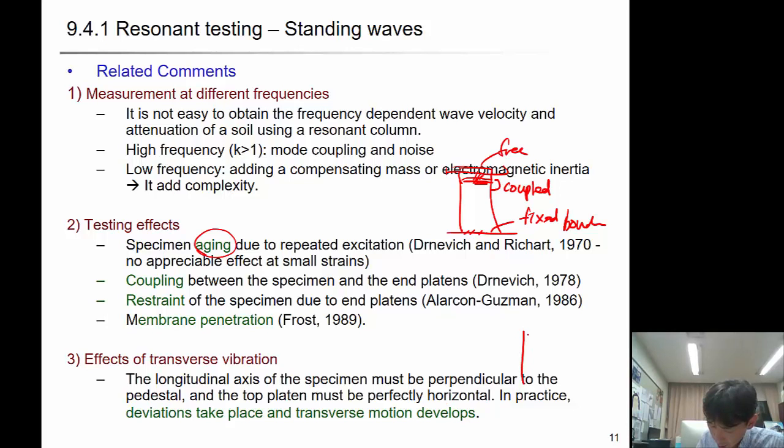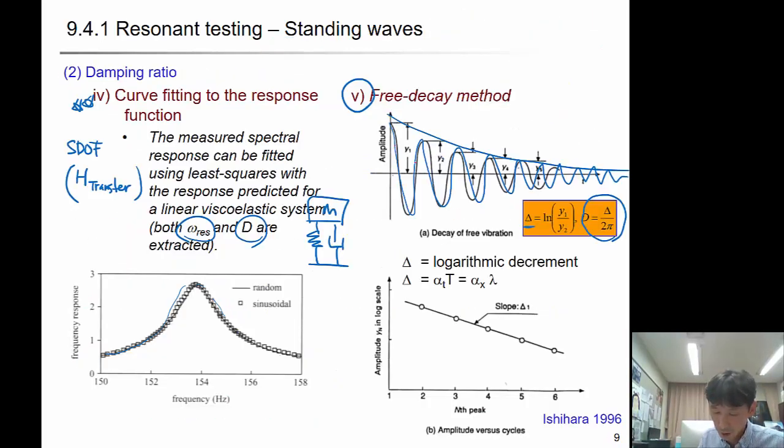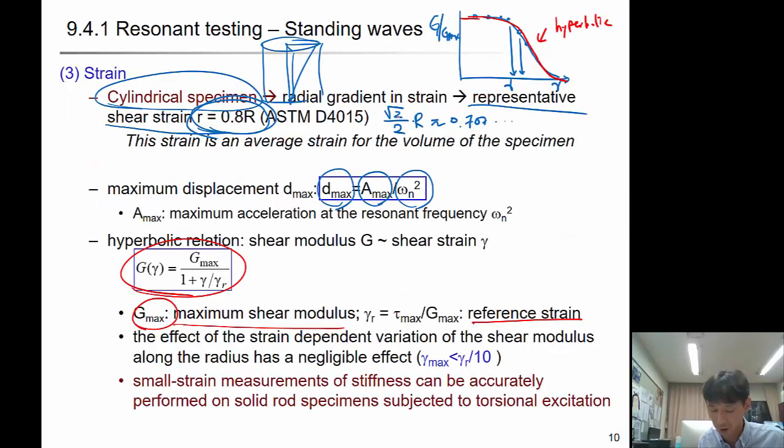The top platen must be perfectly horizontal. In practice, deviation takes place and transverse motion develops. If there's some tilting of the driving plate, it will cause transverse motion and add significant noise to your signal. Counter-EMF effects: the vibration of the magnet relative to the coil produces counter-electromotive force. Even though you apply zero voltage after oscillation, because of residual movement between coil and magnet, it creates counter-electromagnetic force that attenuates the signal fast.